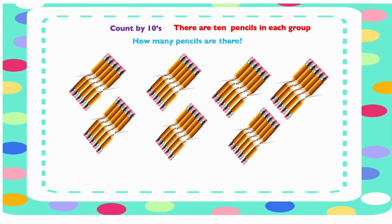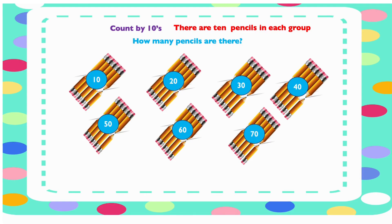We have groups of pencils here. How many are there all together? Let's count in tens. 10, 20, 30, 40, 50, 60, and 70. So we have 70 pencils all together.